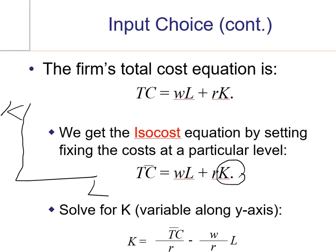Total cost, which is given at a fixed amount, divided by r, minus wage over rental price, times L. So, on the next page, we're going to sketch this K. Note that TC over r, this is just going to be a fixed parameter. And w over r is going to be your slope. And that's a negative.